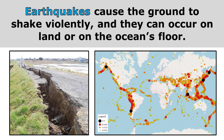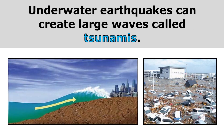Earthquakes cause the ground to shake violently, and they can occur on land or on the ocean floor. Every dot on this map represents a location where an earthquake has occurred. Underwater earthquakes can create large waves called tsunamis. These tidal waves aren't just a little larger than normal — they are huge waves that can cause massive destruction and flooding.